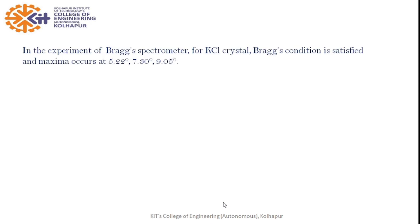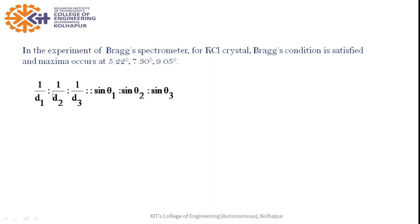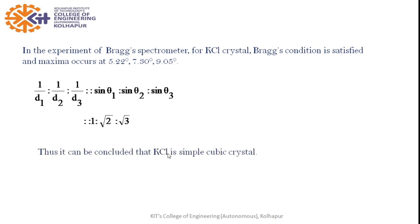Consider the example of a KCl crystal. If we perform the experiment for KCl, we get three values of theta giving maximum intensity: 5.22°, 7.3°, and 9.05°. Putting these values into the equation gives the ratio 1 : √2 : √3, which is the formula for simple cubic. So it appears KCl is simple cubic. However, we know KCl is actually FCC; this is a limitation of the basic calculation — more complicated calculations that we have not considered would reveal the correct FCC structure.